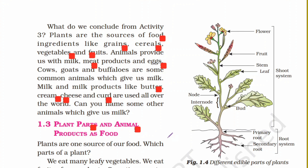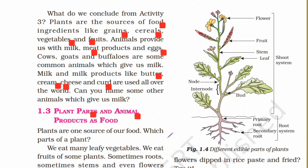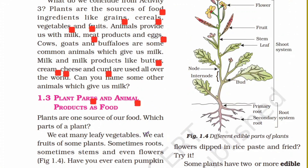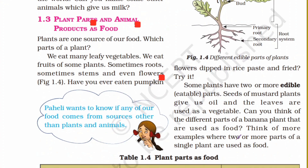Plants are the main source of our food. We use many parts of plants — like we use leaves as vegetables, sometimes we use fruits, roots and even flowers also. Some plants have two or more edible parts. For example, seeds of mustard plants give us oil, and we also get vegetables from it. You must have heard of Sarson ka Saag, the famous dish of Punjab that we get from mustard leaves.